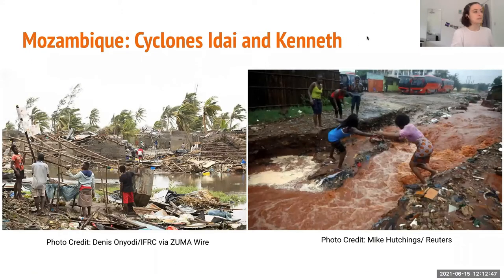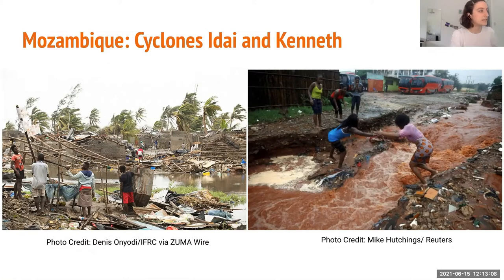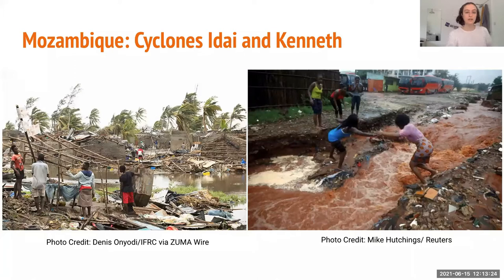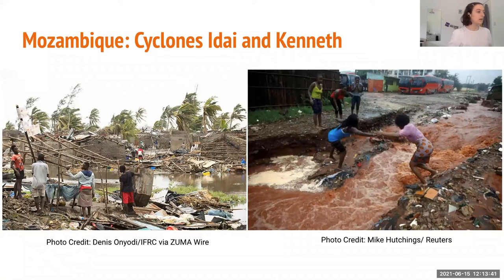One example of loss and damage were the twin cyclones in Mozambique in 2019 that happened within one month of each other. There was an enormous amount of damage — around two million people affected, hundreds of thousands displaced, and some of those people remain displaced today. Mozambique didn't receive the support it needed to recover from some of the strongest cyclones it's ever seen, and its economy and society remain challenged by the climate impact they faced two years ago.